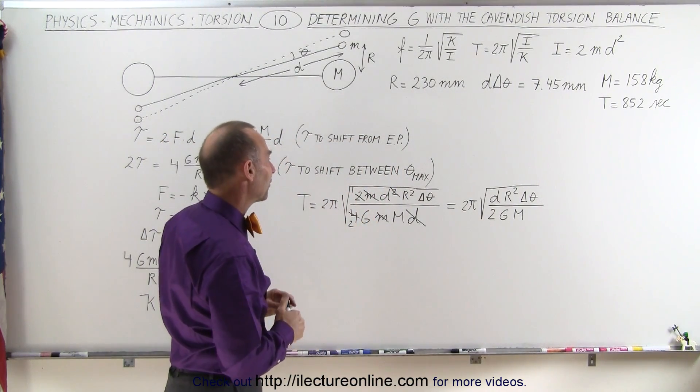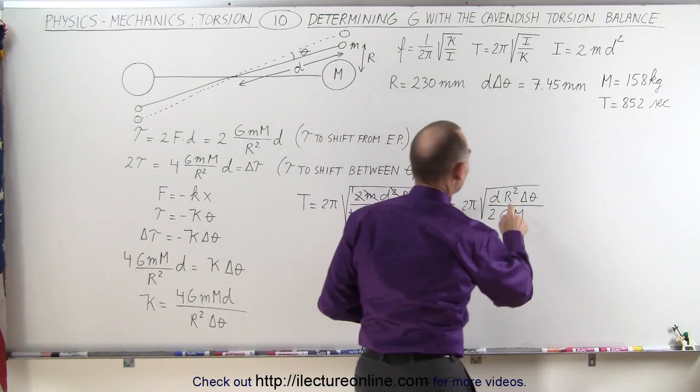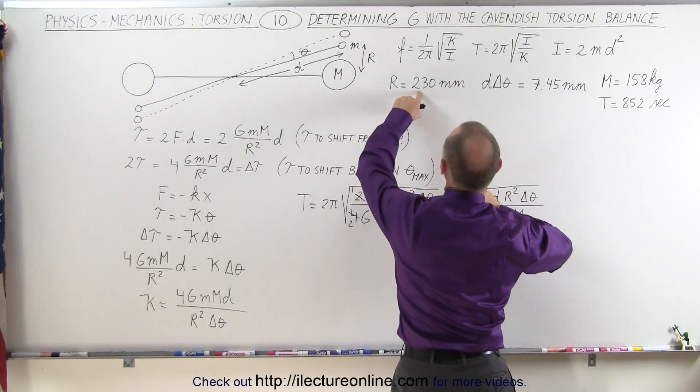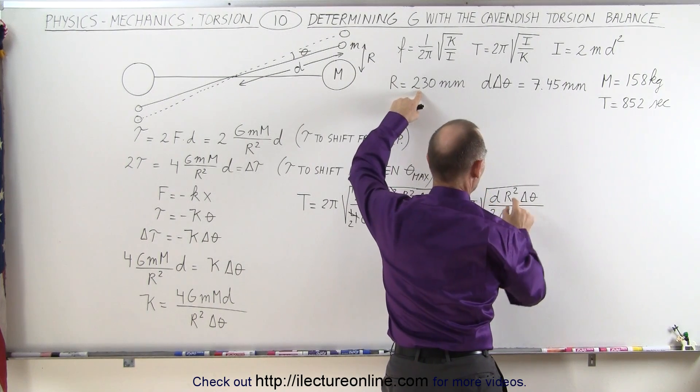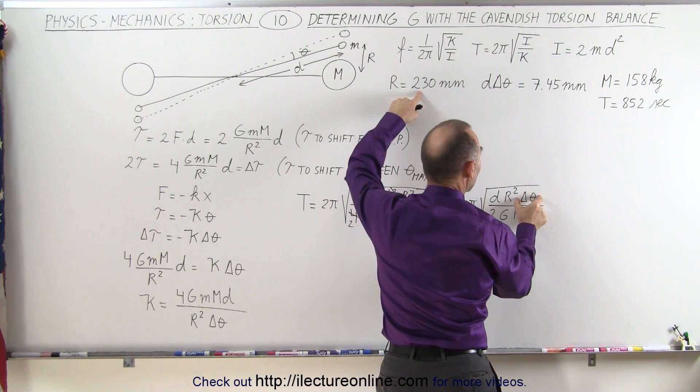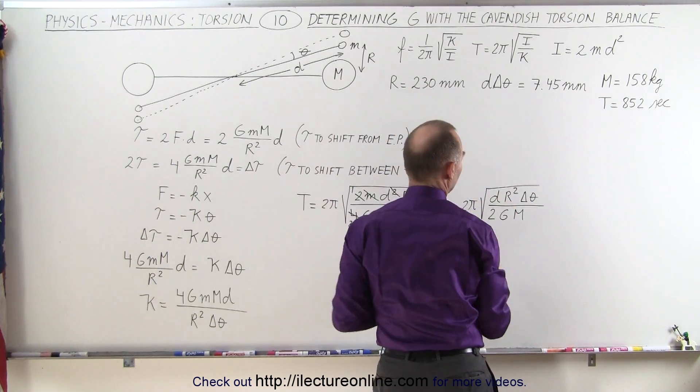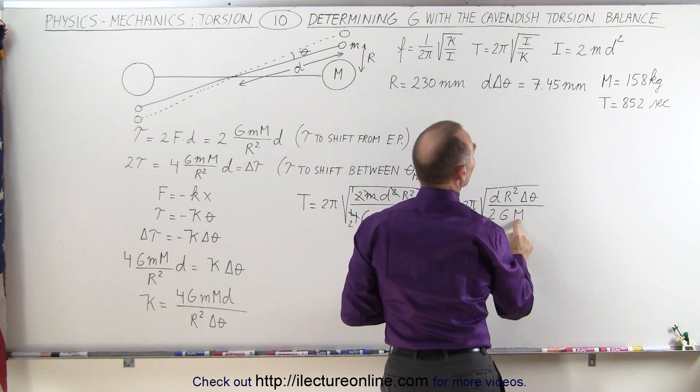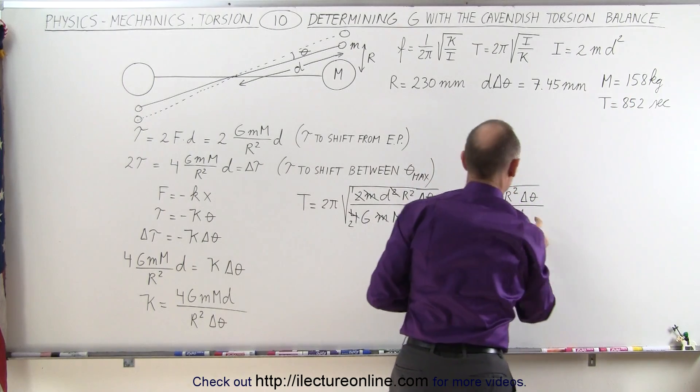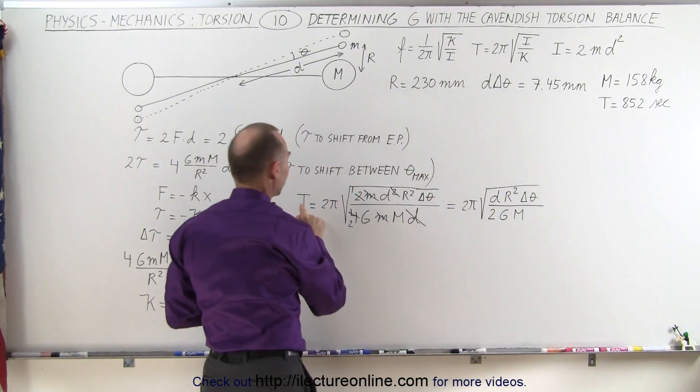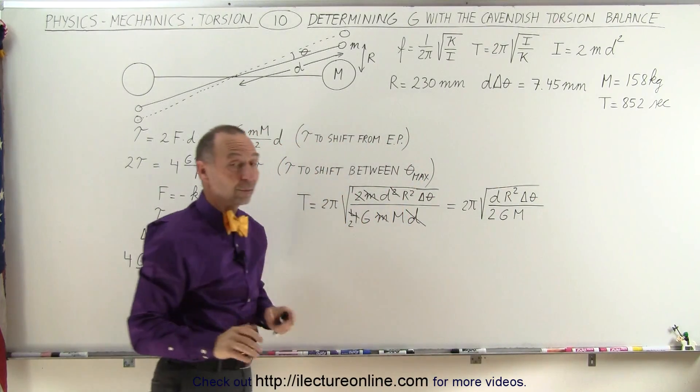Now notice we have everything we need. So let's see what we have here. We have R, R is known, that's the distance between the two spheres, which is 230 millimeters. We know D times delta theta, which is the arc length of motion, known to be 7.45 millimeters. We know the mass of the large spheres, and G is what we're looking for, and the period was also known to be 852 seconds.